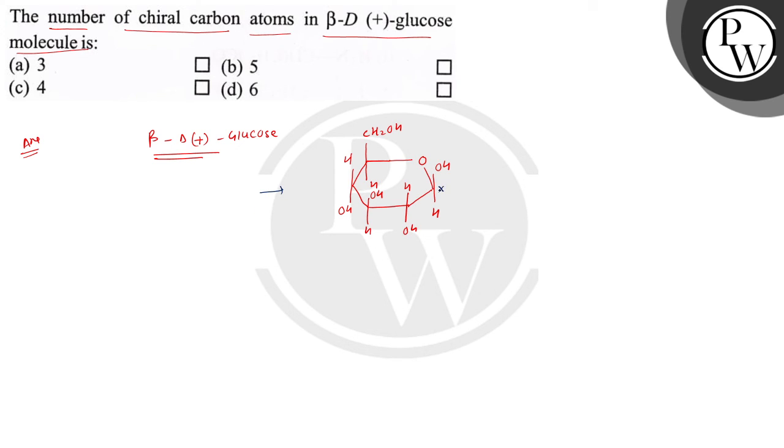the number of carbons are 1, 2, 3, 4 and 5. All these carbons are called chiral. So there are total 5 chiral carbons.